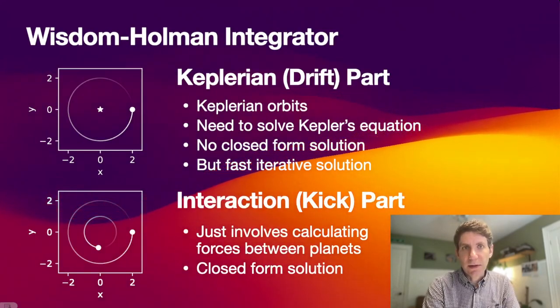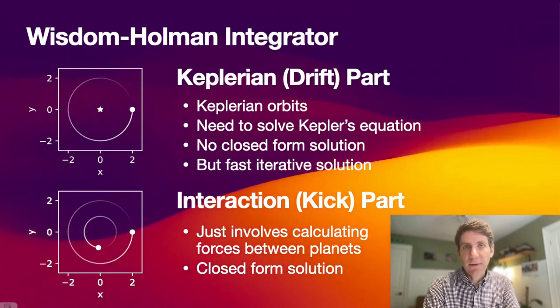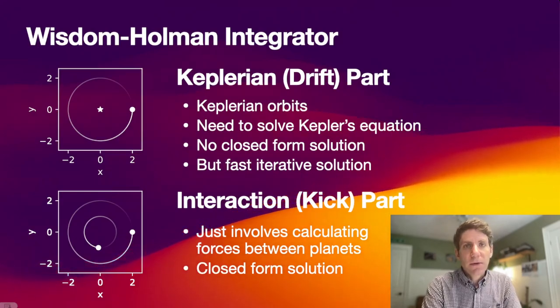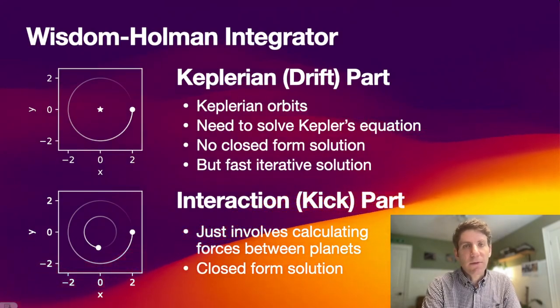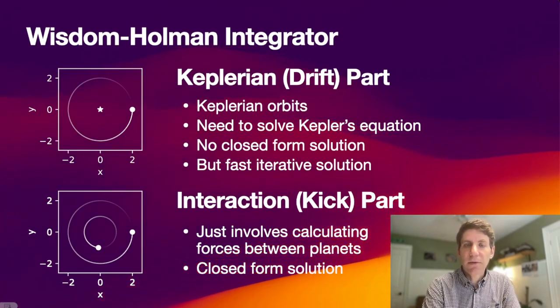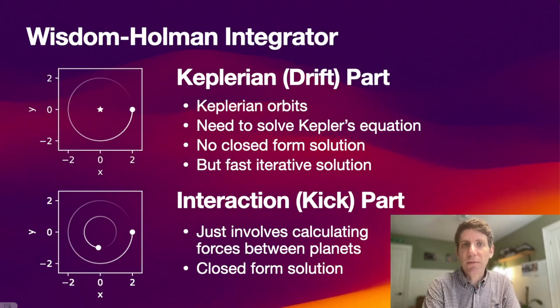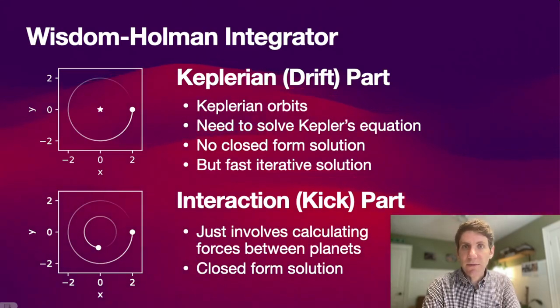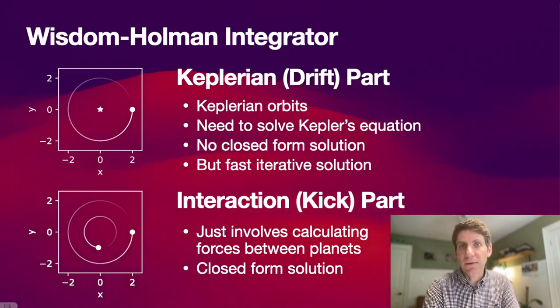Without going into too much detail about the Wisdom-Holman integrator itself, there are two important parts. The Wisdom-Holman integrator is split into a Keplerian part and an interaction part. In the Keplerian part, we assume that there is only one planet around a single object. We evolve the planet around its Keplerian orbit. For that, we need to solve Kepler's equation. There is no closed-form solution available, but we can solve it using a fast iterative solver.